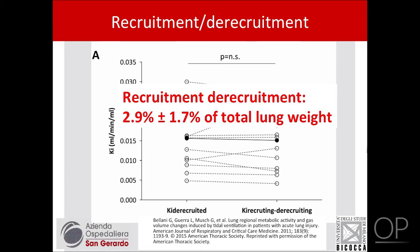With some surprise, we found no difference: the Ki of the regions that are recruited throughout the respiratory cycle is not different from that of the regions undergoing cyclic opening and closing. This does not mean at all that atelectrauma is not injuring the alveoli — there is a great deal of evidence that cyclic opening and closing of an alveolus induces injury. However, what we found was that in our clinical setting, with the ventilatory strategy we applied, the amount of this tissue was just a little — no more than three percent of the total lung weight. So probably in our setting, we didn't see a signal because the amount of lung being opened and closed was relatively small.